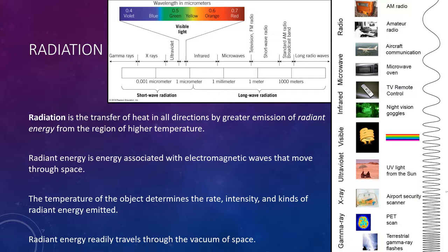Your hand absorbs the non-visible radiant energy being emitted from the stovetop. The radiant energy does work on the molecules in your hand, giving them more kinetic energy, and you sense this as an increase in temperature or warmth. There are lots of different types of electromagnetic radiation — from the most energetic gamma rays, to X-rays, ultraviolet radiation, visible light, then infrared, microwaves, and radio waves.